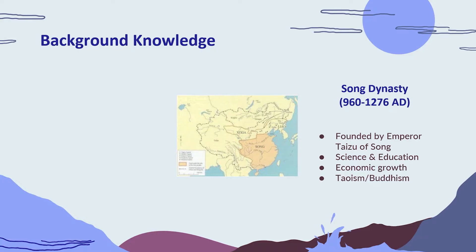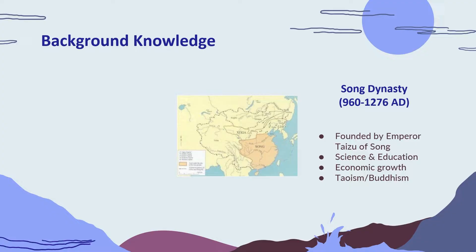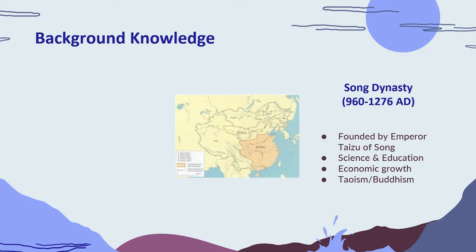Next, the Song dynasty was in 960 to 1276 AD and it was founded by the Emperor Taizu of Song. They mostly capitalized on science, education, and economic growth, and the major religions they followed were Taoism and Buddhism.